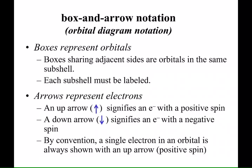This last rule: if there's only one electron in a box, one electron in an orbital, go ahead and give it a positive spin, shown with an up arrow.